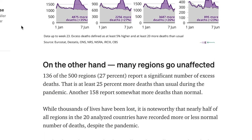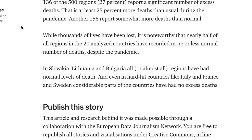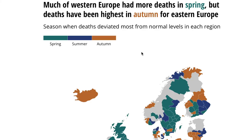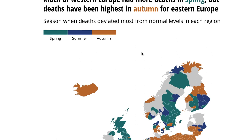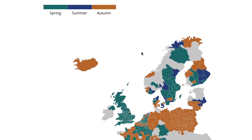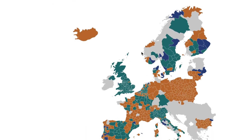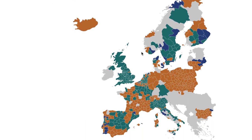Meanwhile, a large proportion of regions had no excess deaths at all in the spring wave. Nearly half of the regions we looked at had deaths that were more or less at normal levels — mostly in Eastern Europe, which was largely spared in the first wave. But even in harder-hit countries like Spain, Italy, or Sweden, there were considerable parts where the pandemic was barely felt. It was very regionally concentrated.